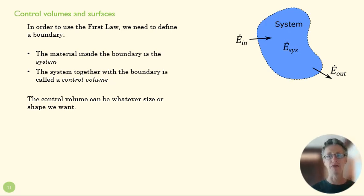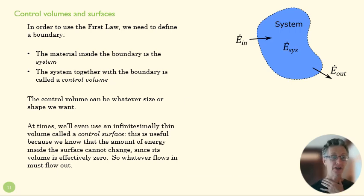One special case is when we create a really narrow control volume called a control surface, and we make that infinitesimally small. And the reason we do that is as we shrink it down and down into an infinitesimal surface, it doesn't have any volume.